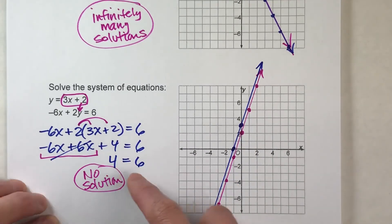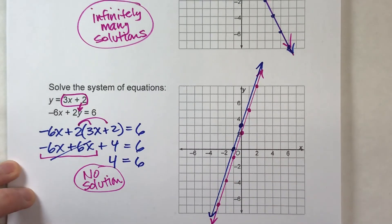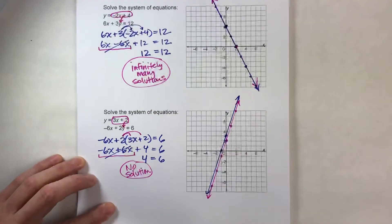In algebra, it'll look like a situation where there's no variables, and a number is equal to a different number.